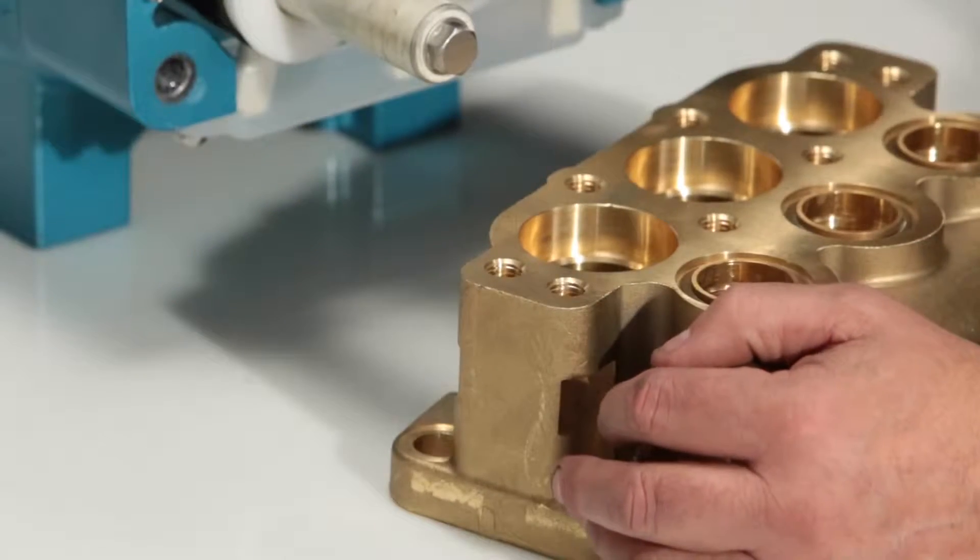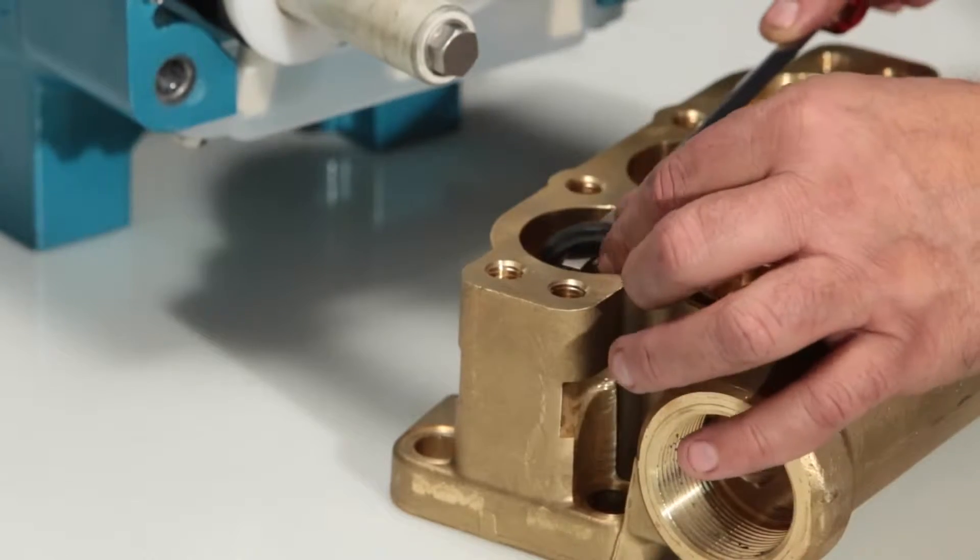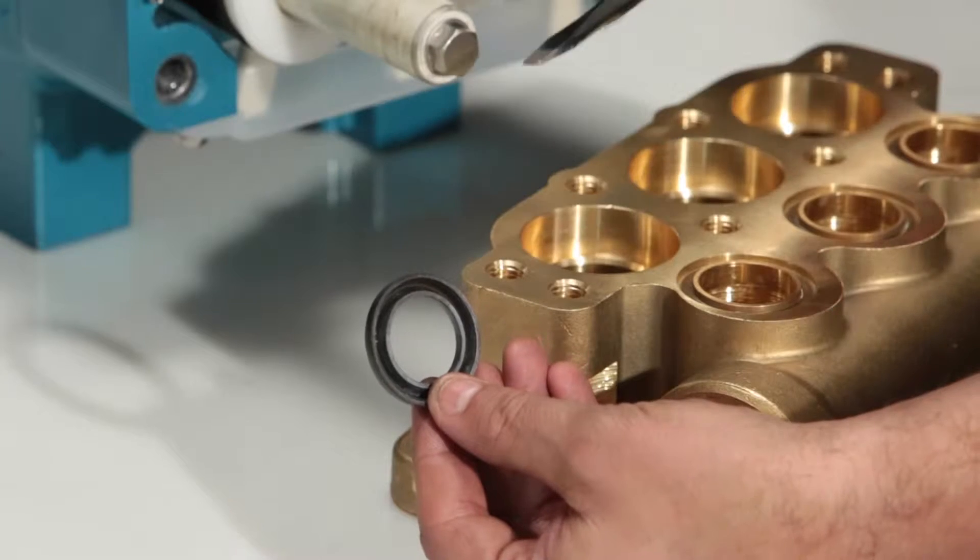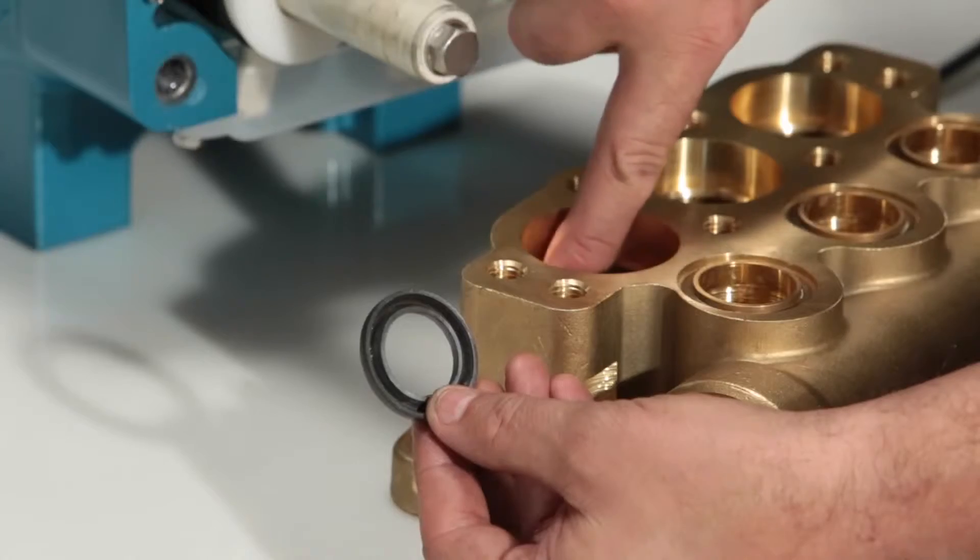Next, remove the V-packings with a screwdriver. There are two V-packings in each cylinder. Use caution ensuring you do not scratch the sealing surface during removal.